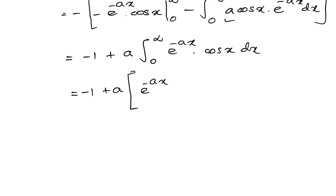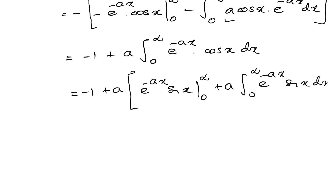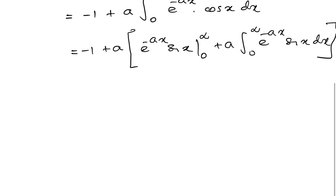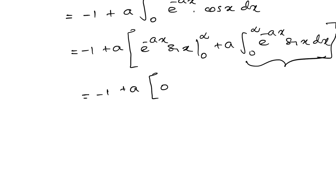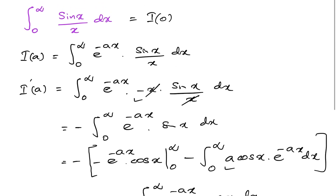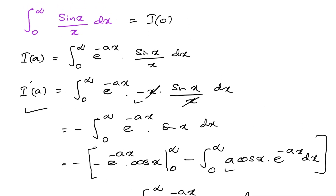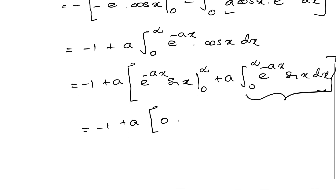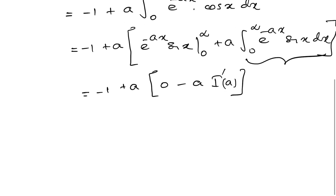We have sin(x) evaluated from 0 to infinity, giving 0, plus a times the integral from 0 to infinity of e^(−ax) sin(x) dx. Applying the limit again gives −1 plus a times 0. Now we recognize that this integral from 0 to infinity of e^(−ax) sin(x) dx is related to I'(a), so we get minus a times I'(a).